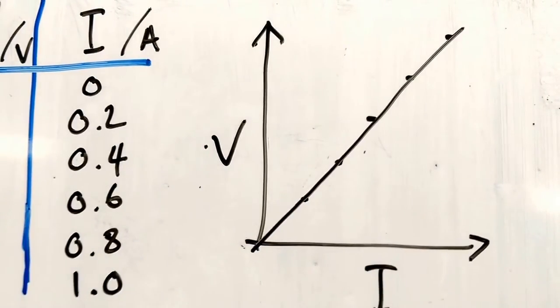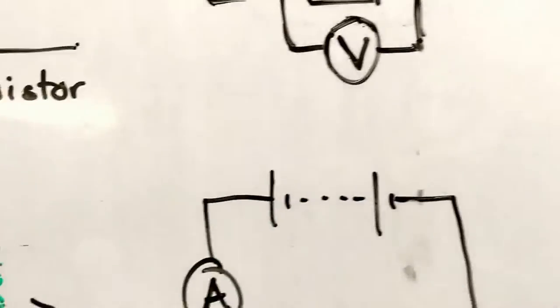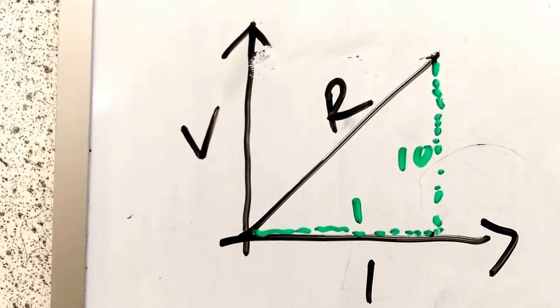You can actually use that graph to calculate a value for the resistance of that resistor. Here's how we do that. We calculate what's called a gradient.